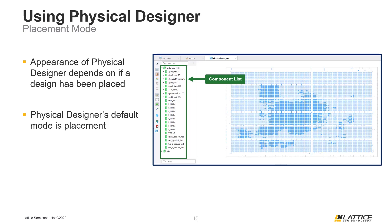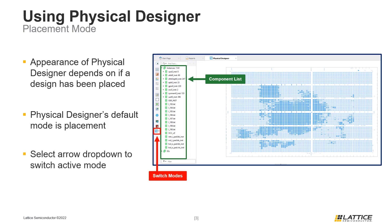Additionally, selecting a placed cell from the main view of the window will do the same thing, highlighting the component's name in the list of instances. As mentioned previously, Physical Designer consists of three modes. To switch between Physical Designer's active mode, select the arrow next to the icon from the bottom left of the toolbar. Doing this will open up a drop-down allowing the active Physical Designer mode to be switched.